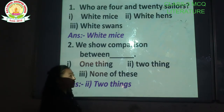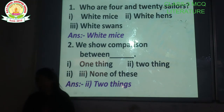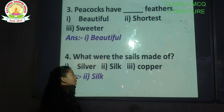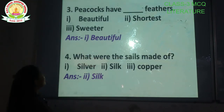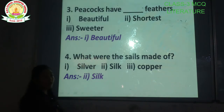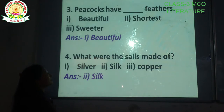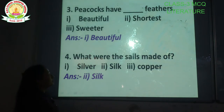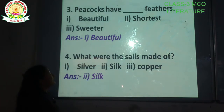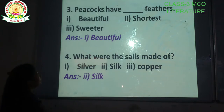Question number 3: Peacocks have dashed feathers. Options are: beautiful feather, shortest feather, sweeter feather. The correct option is option number 1 — beautiful. Peacocks have beautiful feathers.